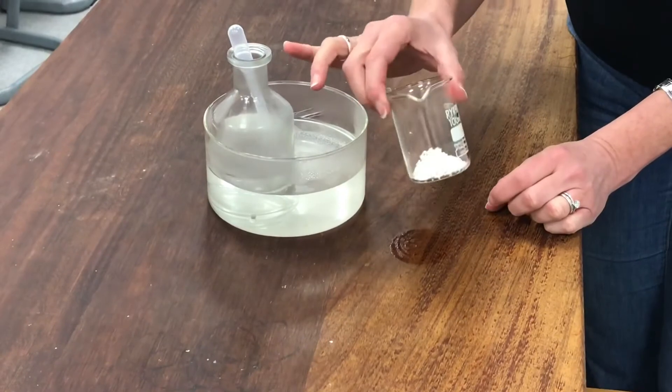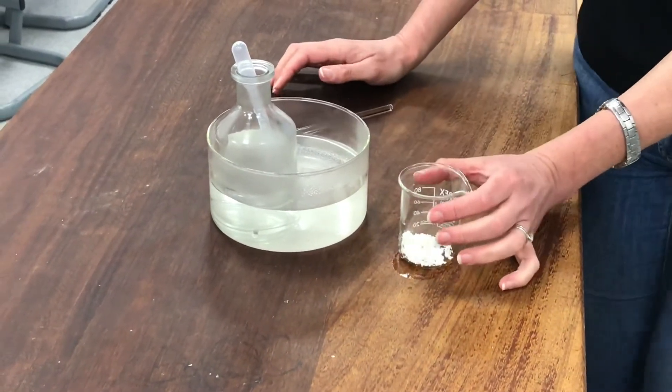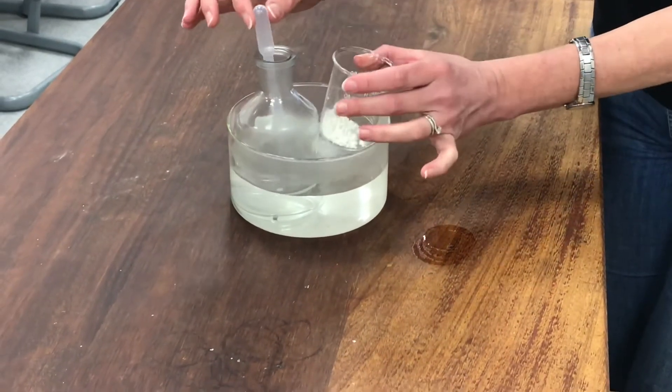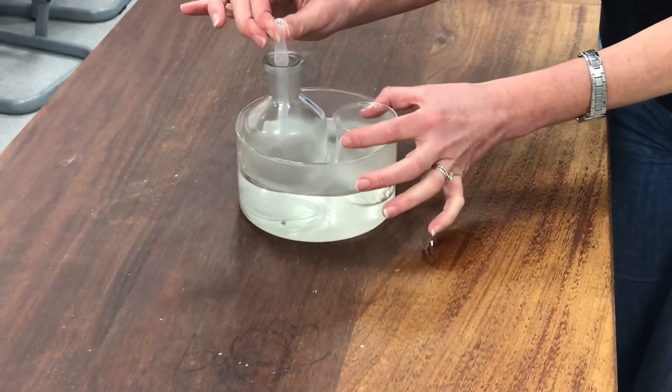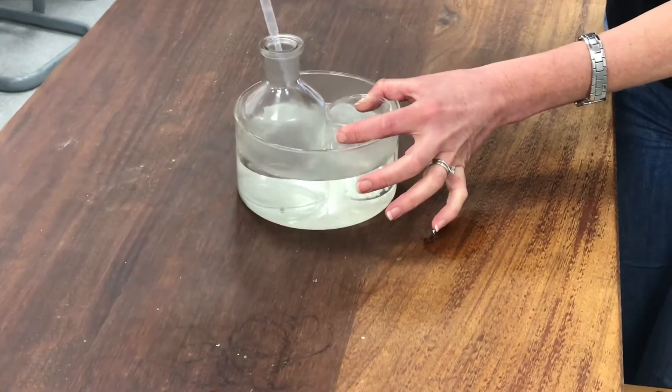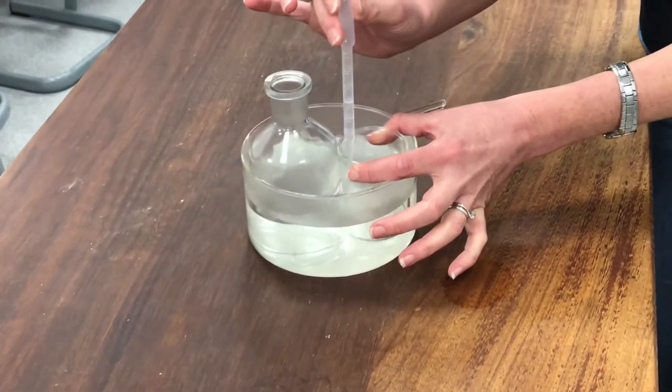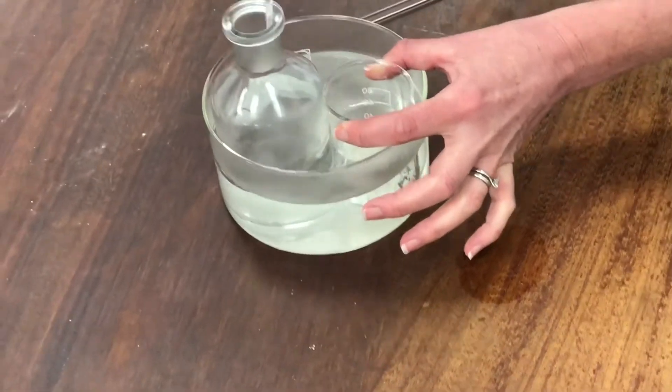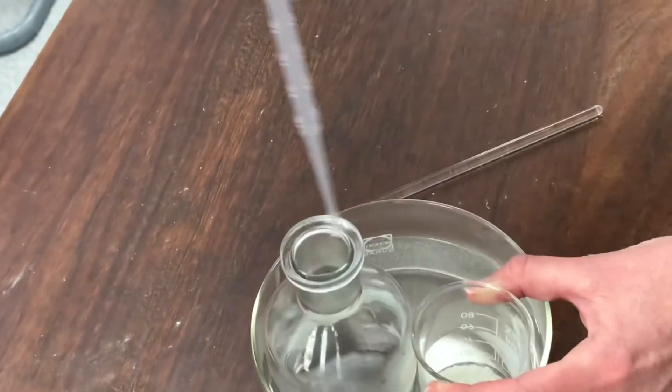So this is my product that I've extracted from the Buchner funnel. And I'm now going to transfer it to this water bath where I've got some nice warm ethanol, some hot ethanol. And I'm going to try to recrystallize it from the minimum amount of hot ethanol. I'm going to add some ethanol to the mixture and try to get it to dissolve.